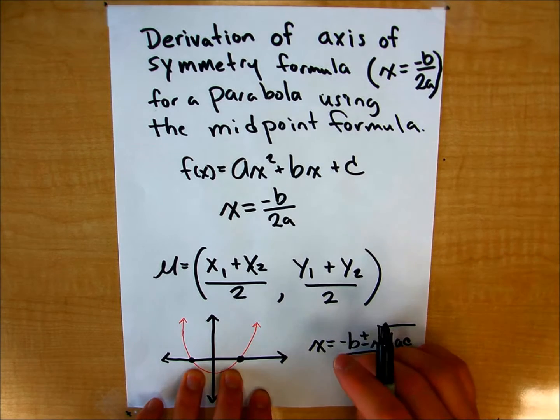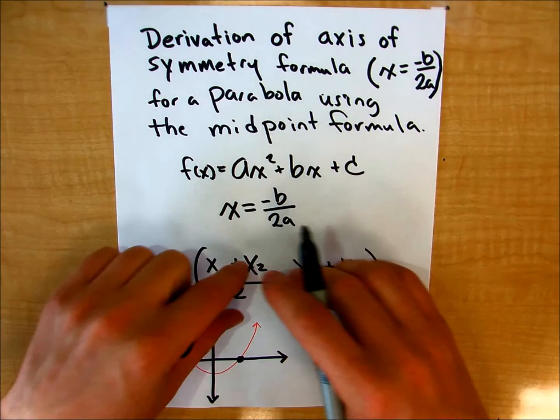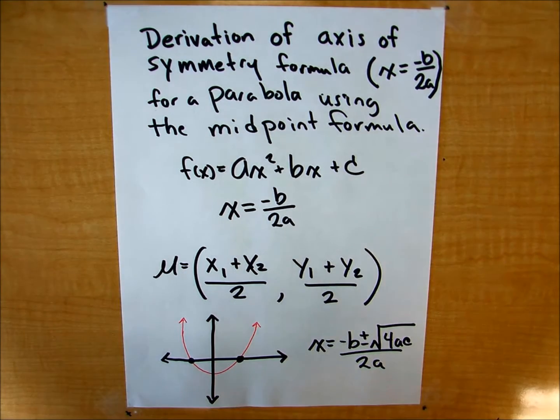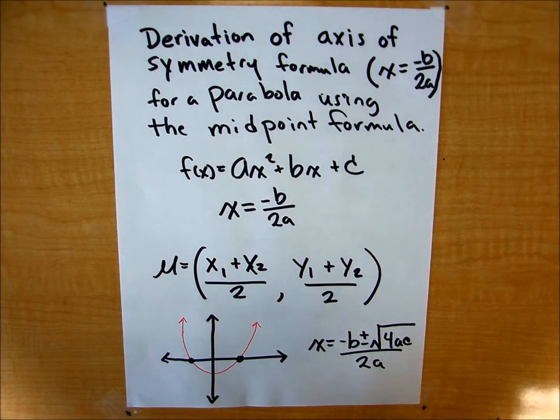Once I've found them, then I can use my midpoint formula to solve for my axis of symmetry. This will all become clear what I'm doing in one second.